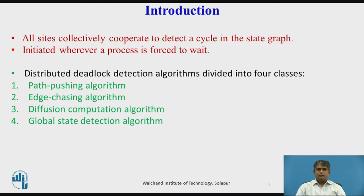In Distributed Deadlock Detection Algorithms, all sites collectively cooperate to detect a cycle in the state graph that is likely to be distributed over several sites of the system. The algorithm can be initiated whenever a process is forced to wait, and it can be initiated either by the local site of the process or by the site where the process waits.